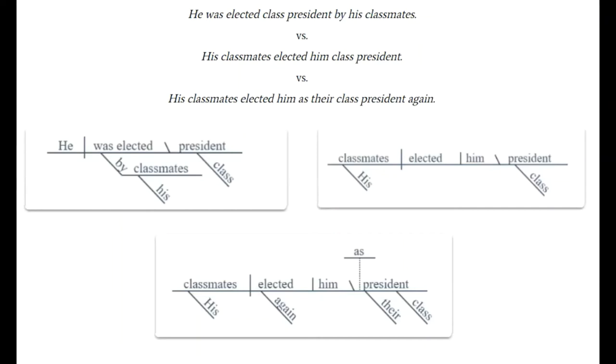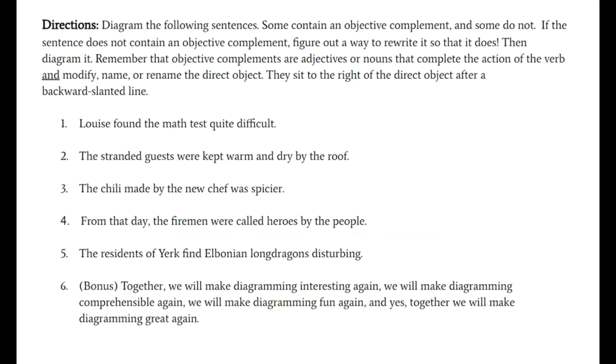Okay, so let's try some of these out, because the best way to learn is to do. Let's begin. We have five sentences here, plus a bonus. And the directions are to diagram the five sentences. Unless the sentence does not currently have an objective complement. If it does not, figure out a way to rewrite it so that it does have an objective complement. Good luck, have fun, and enjoy.